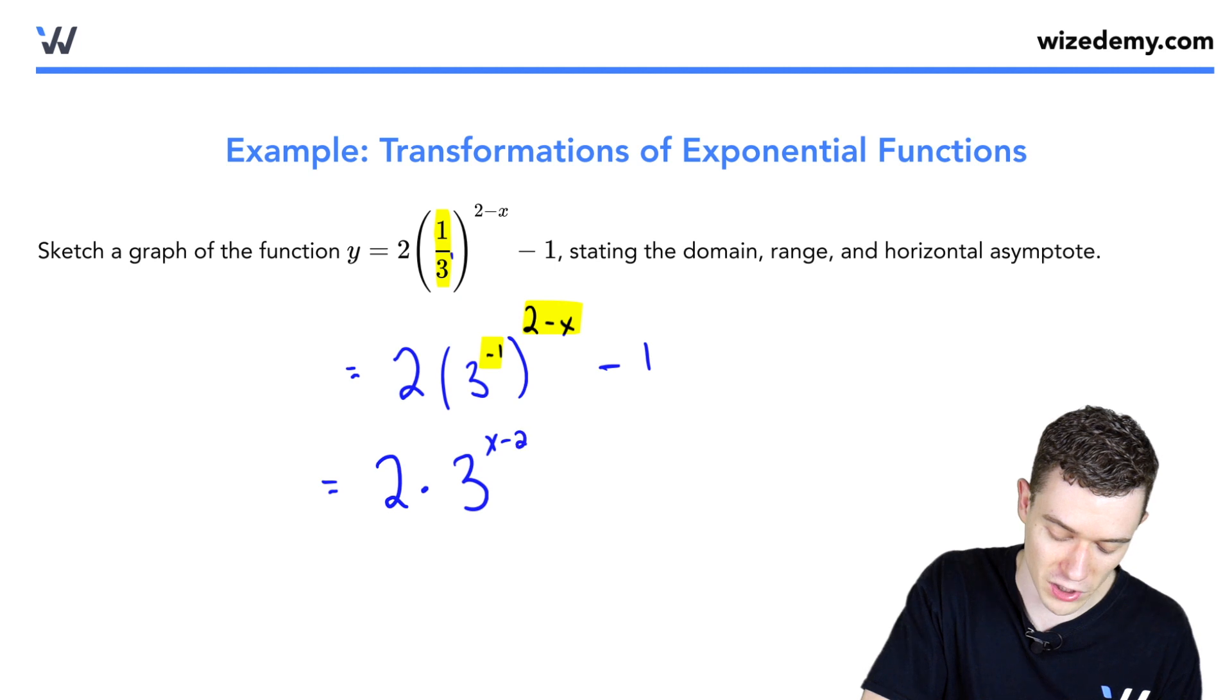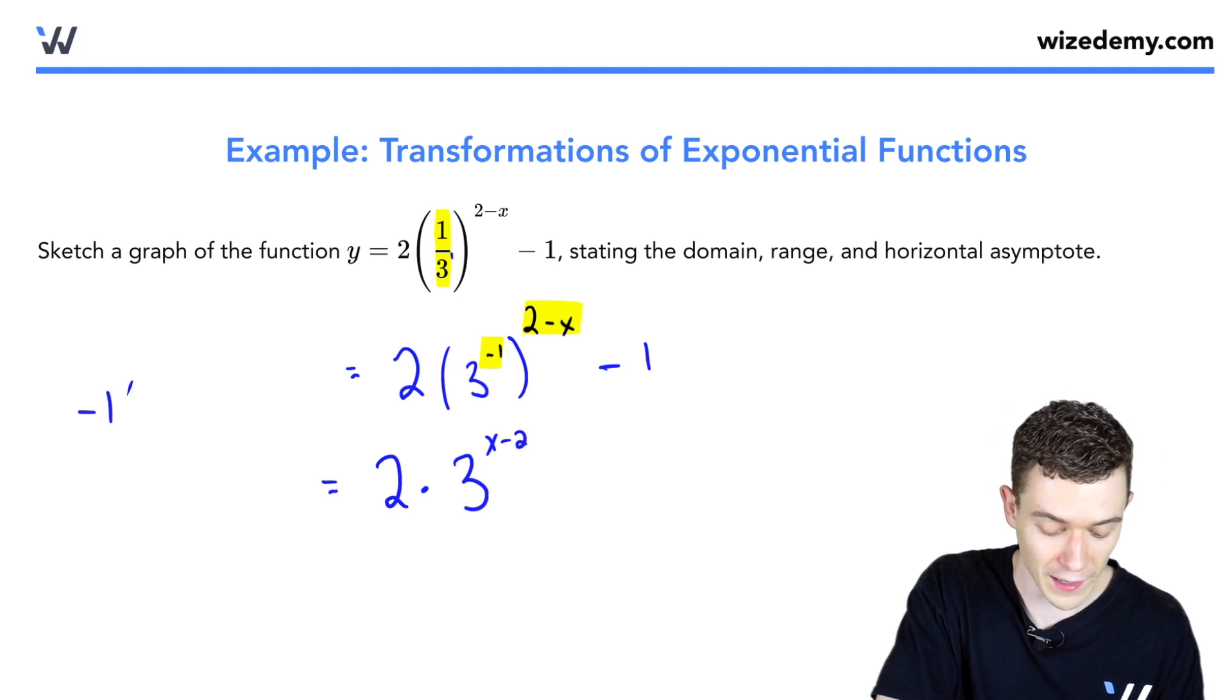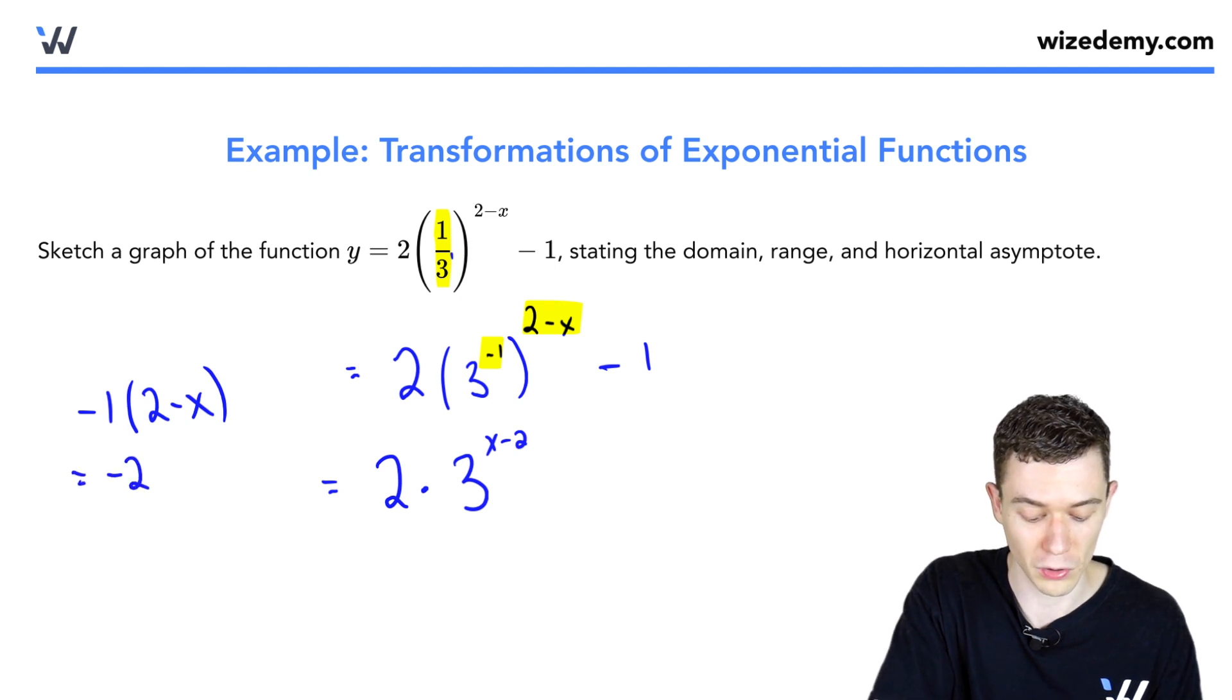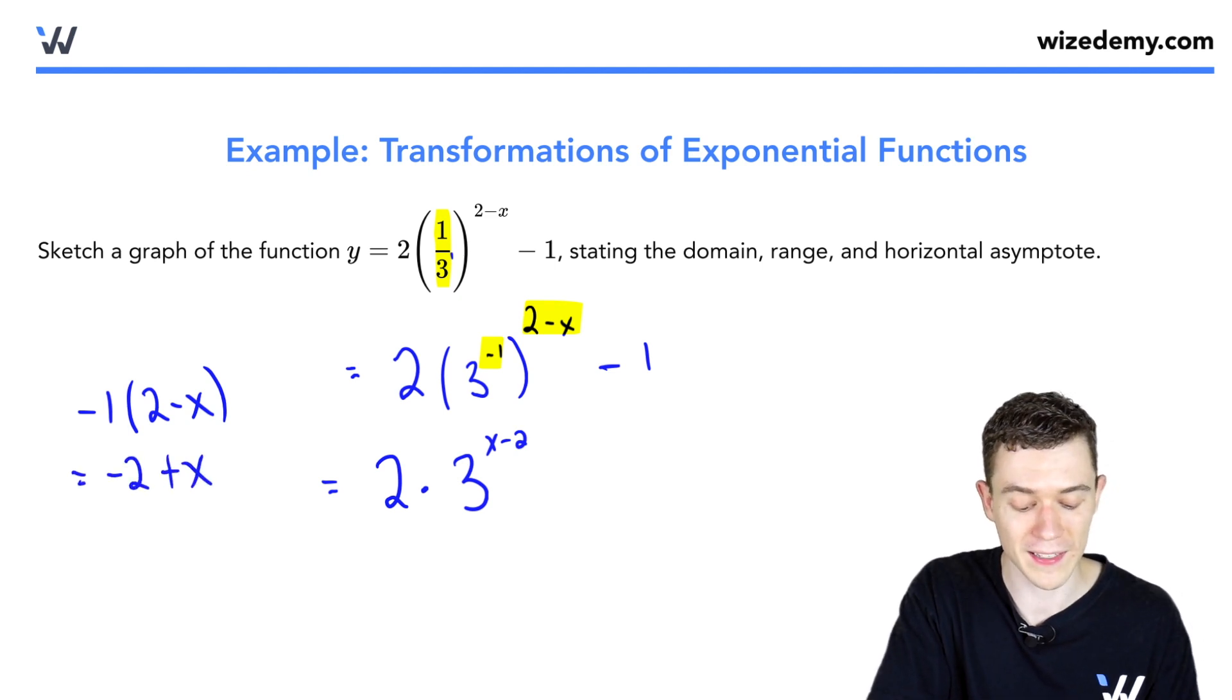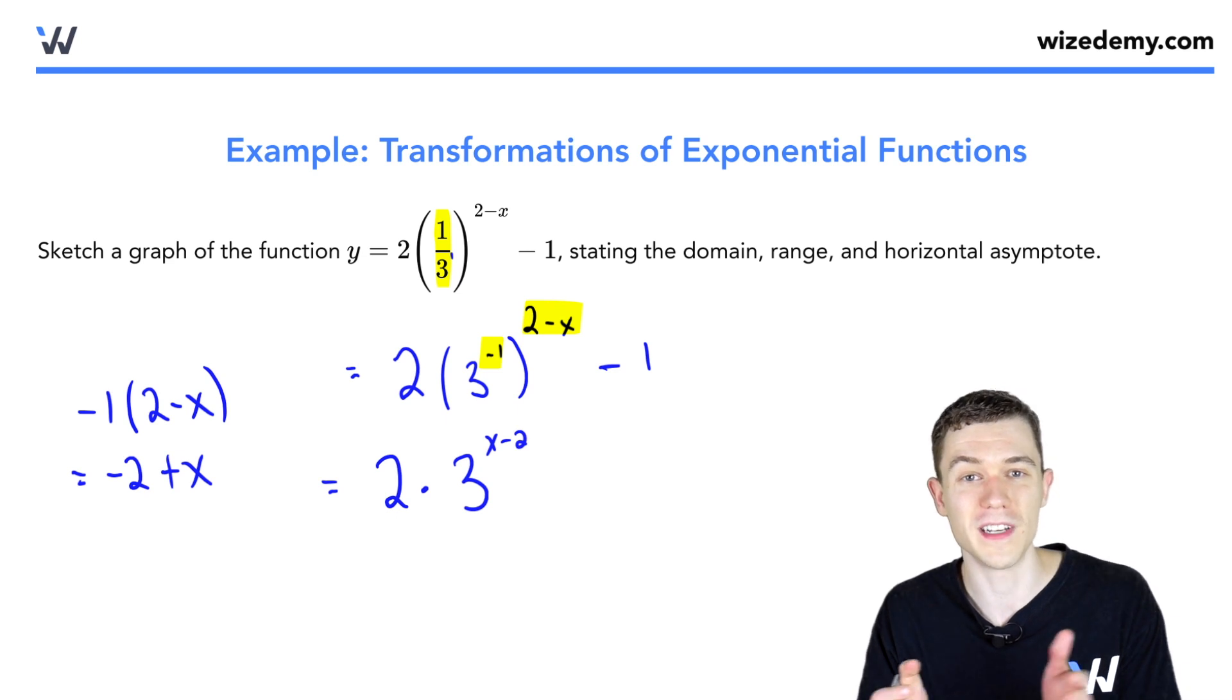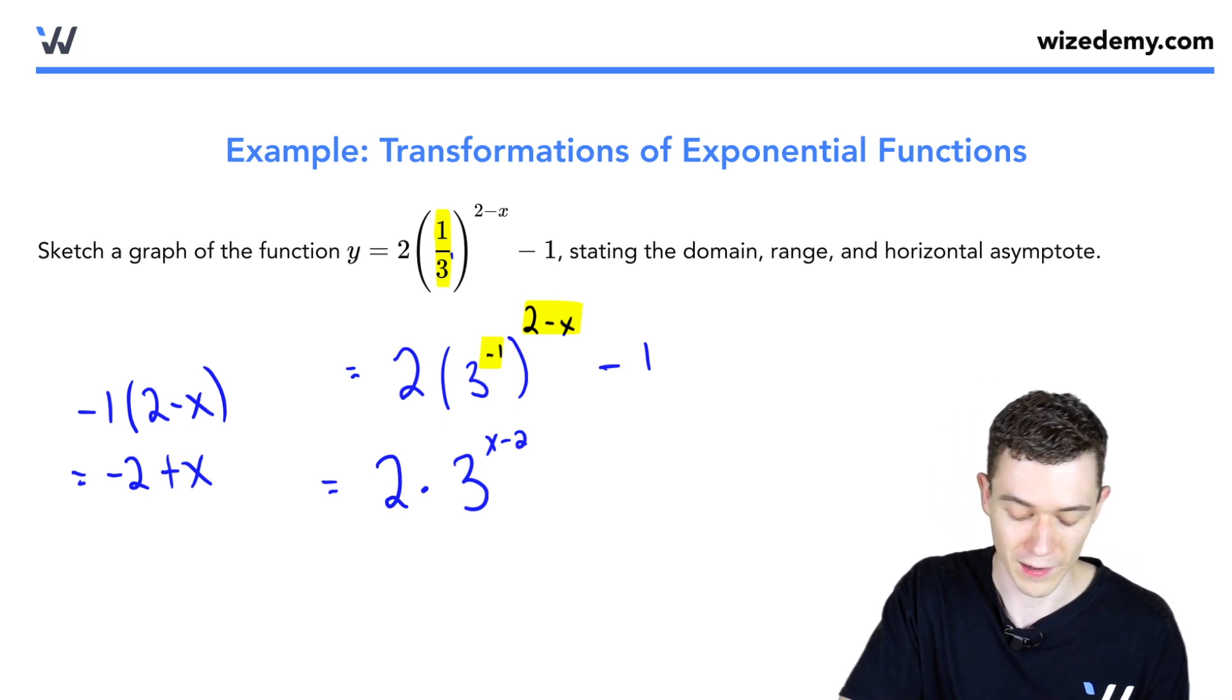The reason is that negative one times two minus x, we would distribute and get negative two minus a minus is plus x, and then the commutative law for addition, we can just rewrite those. We still have minus one at the end.